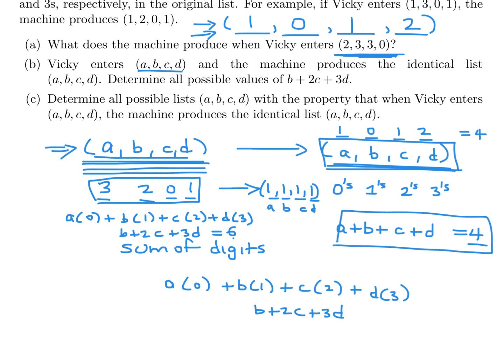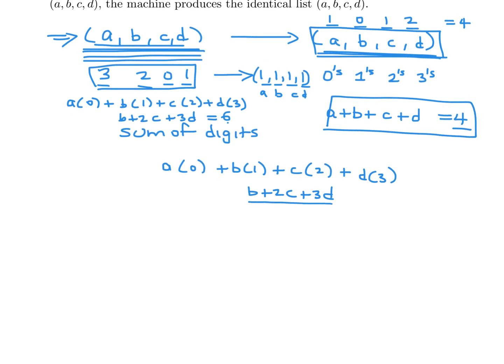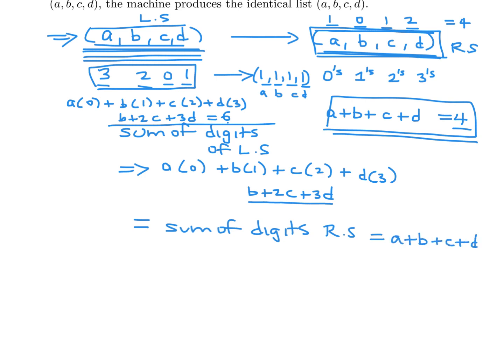But in the question part B, they're saying that A, B, C, D is going to spit out A, B, C, D. So, that means is that this guy is going to be the same as this guy. You see what I mean? Because the sum of the digits on this side is the same as the sum of the digits on this side since it's the same digits. So, the sum of the digits of the left side, which is calculated by this, which ends up being B plus 2C plus 3D, is the same as the sum of the digits on the right side, which is A plus B plus C plus D. But only when A, B, C, D converts to A, B, C, D.